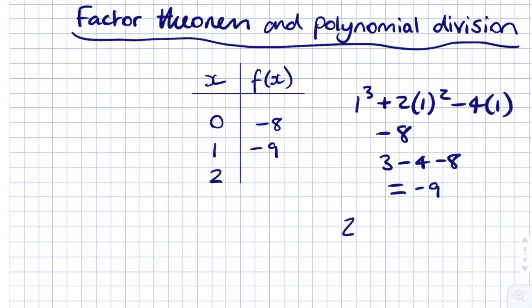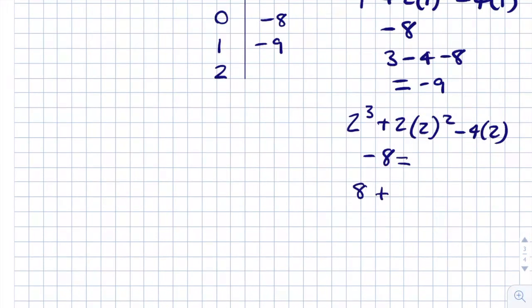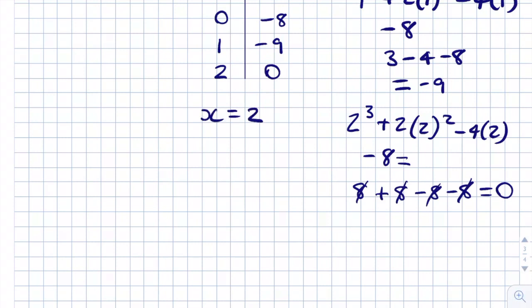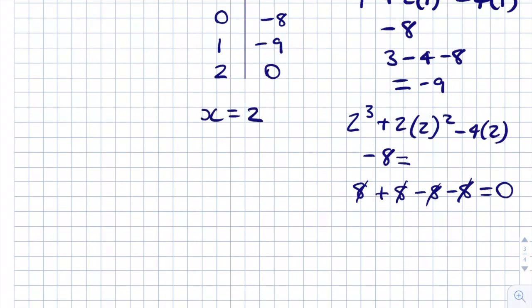2³ = 8, 2² × 2 = 8, 4 × 2 = 8, minus 8. The 8s cancel out, giving f(x) = 0. So x = 2 is a solution, meaning the linear factor is (x - 2). Now we'll use polynomial division to find the quadratic factor.